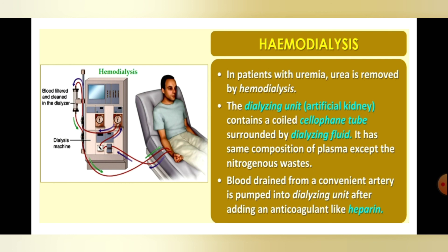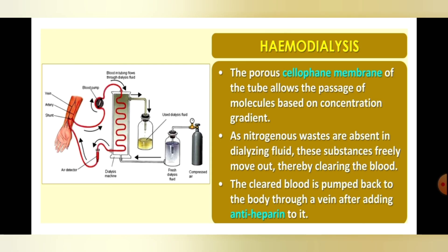Blood is drained from the patient via an artery and sent to the dialyzing unit after adding anticoagulant. Inside the cellophane tube, molecules move by concentration gradient. Because urea concentration is higher in impure blood than in the dialyzing fluid, urea moves from the blood into the dialyzing fluid, purifying the blood.